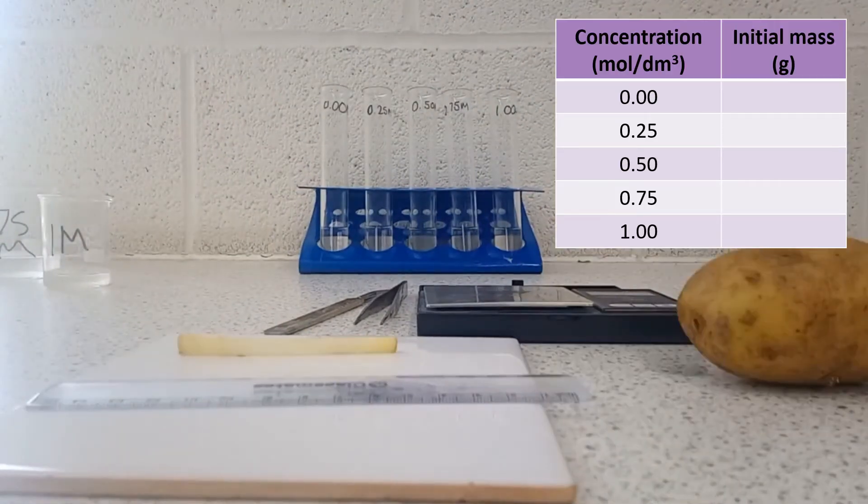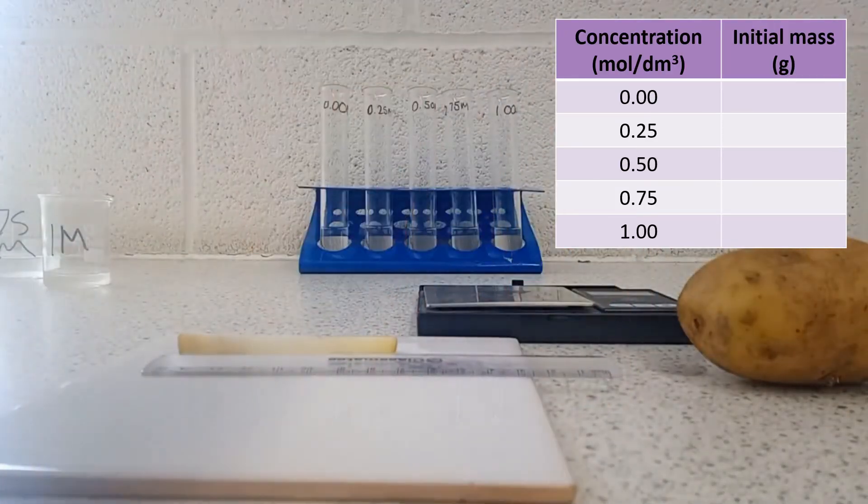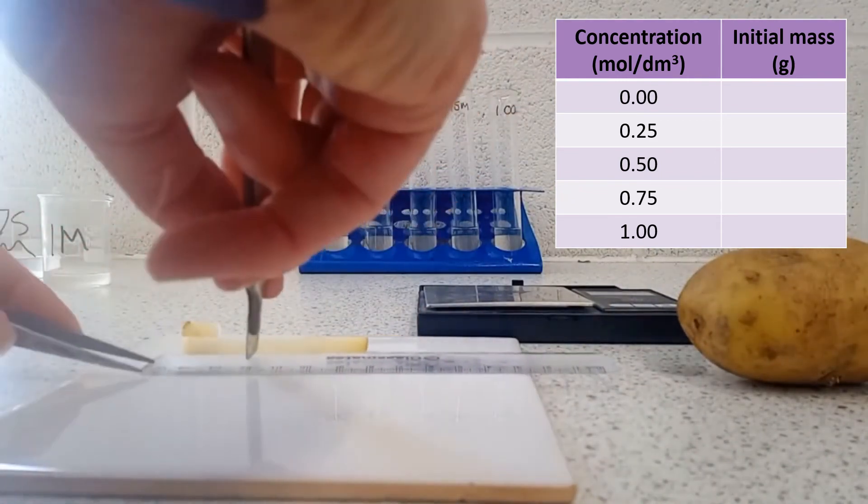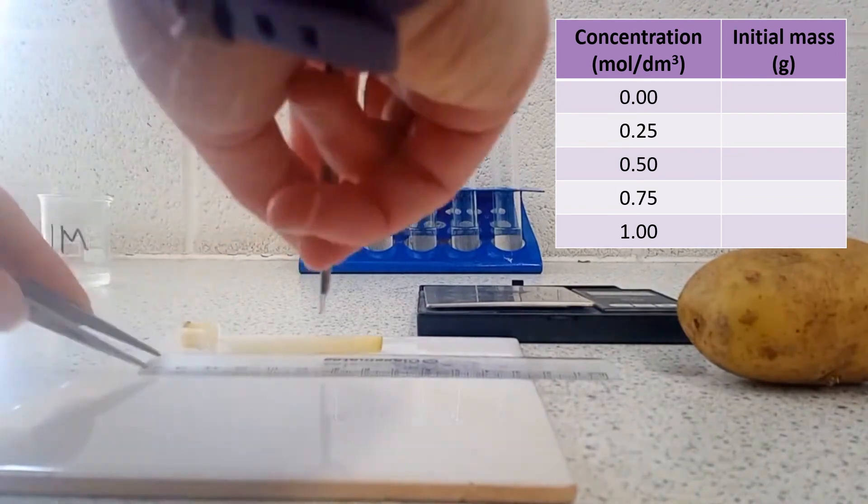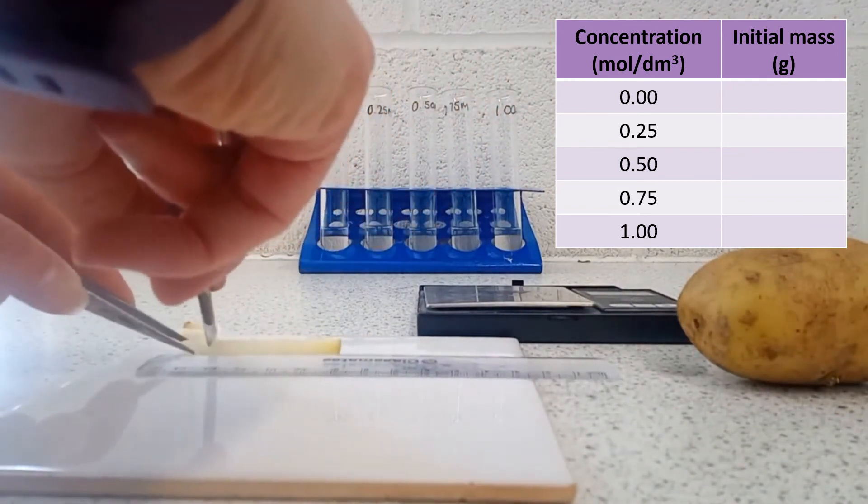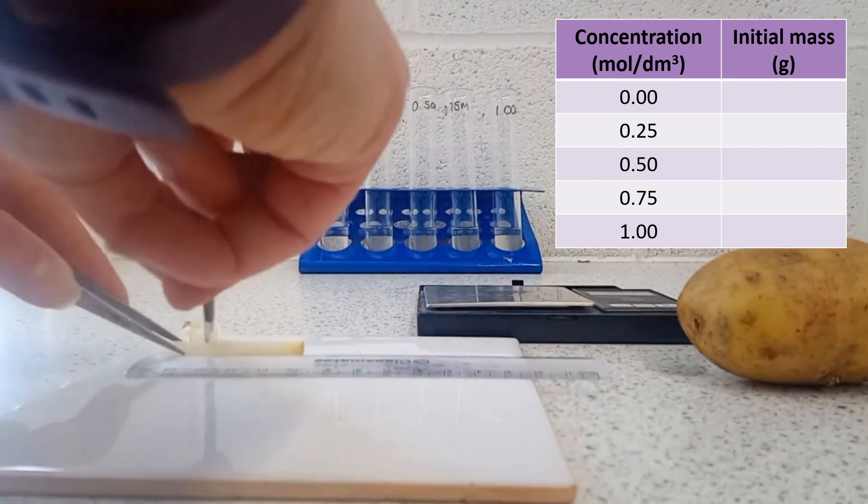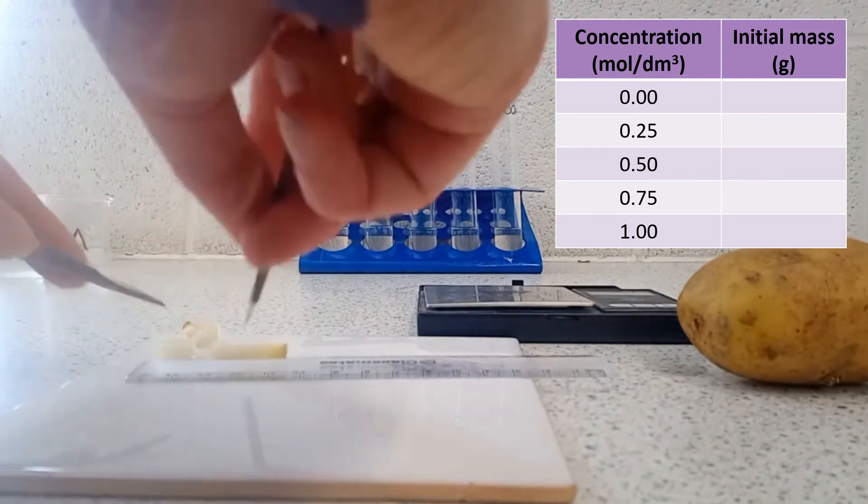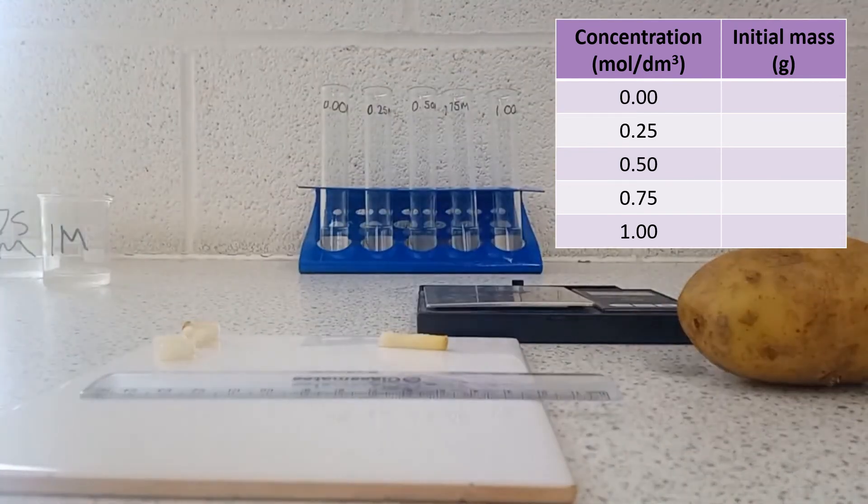I now use a ruler, forceps, and a scalpel to cut five 10mm pieces of potato to go into the five solutions. I measure the mass of each one using the balance, and this is important because even using the borer and the ruler, my pieces aren't actually identically sized. So I need to know what the mass is at the start so that I can work out the percentage change in mass.